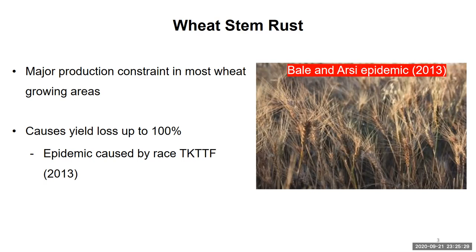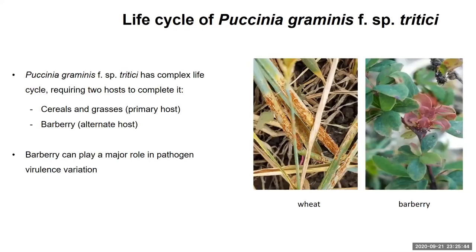The best example for this, as indicated in this picture, is the Bale and Arsi epidemics caused by race TKTTF. Stem rust of wheat, caused by Puccinia graminis f. sp. tritici, has a complex life cycle requiring two hosts to complete its life cycle — cereals and grasses as the primary host, and the alternative host, Berberis. Berberis can play a major role in pathogen variation.